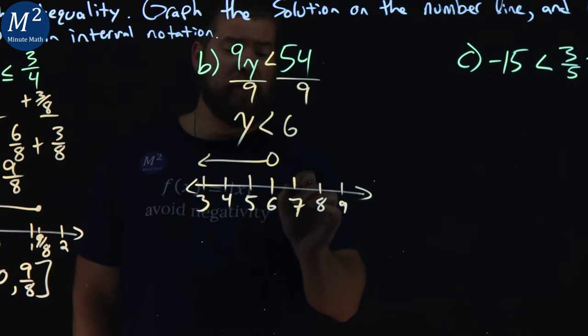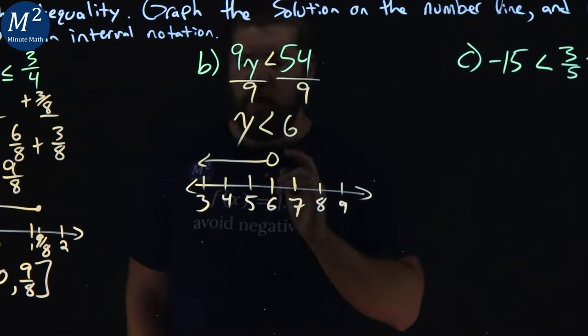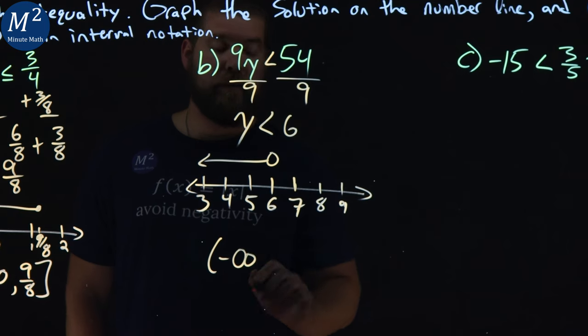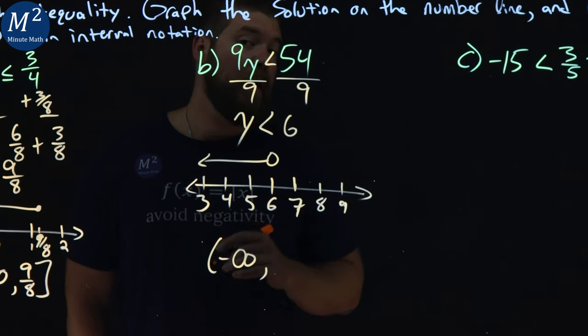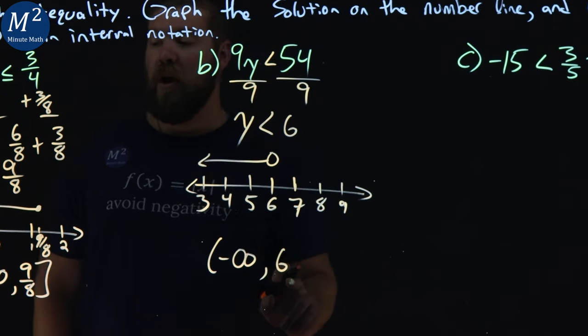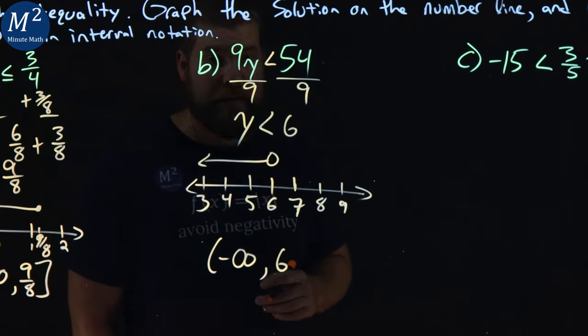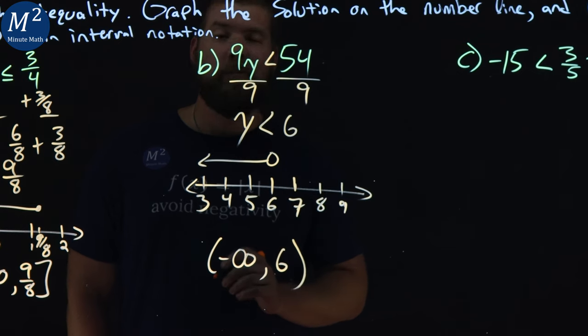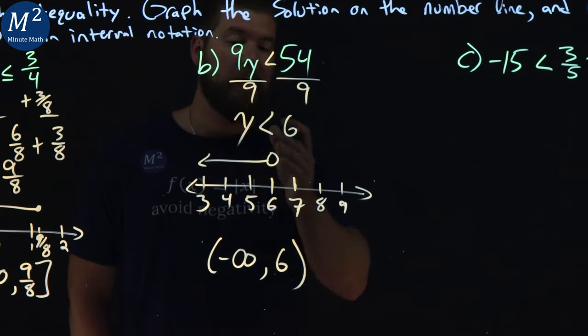We have our graph. Not too bad to write. So let's write our interval notation. The lowest value that y can be is negative infinity. Remember, with infinities, we put parentheses. It can go up to a positive 6 here. And so 6 is the upper bound. But can we equal 6? No, we can't. It does not equal 6. So we have a parenthesis there as well. And now here we have our interval notation for our inequality.